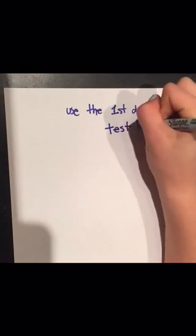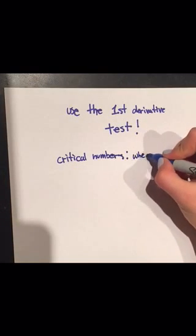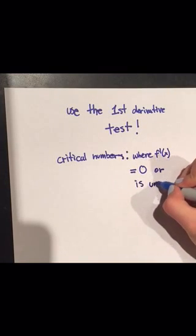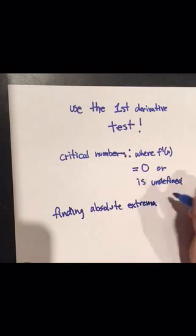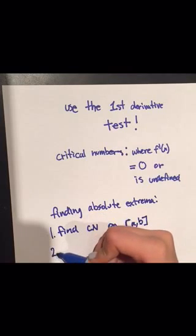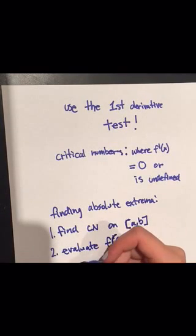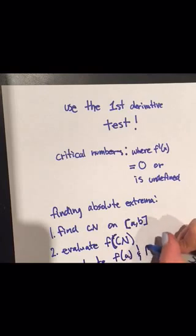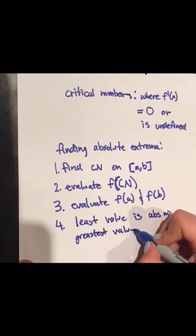This is not actually the first derivative test — it is simply the steps to finding absolute extrema. Critical numbers are where f' is 0 or where f' is undefined. There are four steps to finding absolute extrema: first, find the critical numbers on the given interval; next, evaluate the function at these critical numbers; then evaluate the function at the endpoints; finally, compare all function values. The least value is the absolute minimum and the greatest value is the absolute maximum.